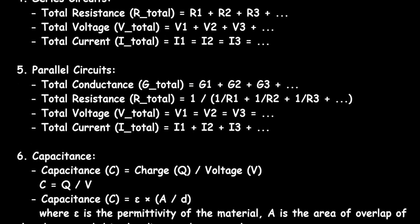Next is parallel circuit. Total conductance — conductance is represented by capital G. So G total is equal to G1 plus G2 plus G3, and so on. In a parallel circuit, we simply add the conductances. Then total resistance is equal to 1 upon (1/R1 plus 1/R2 plus 1/R3, and so on). So this is for parallel circuit.